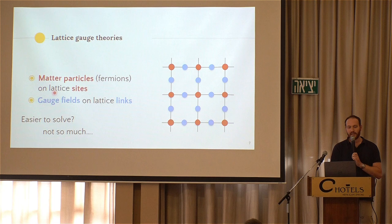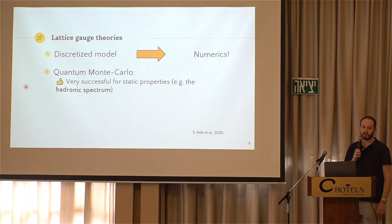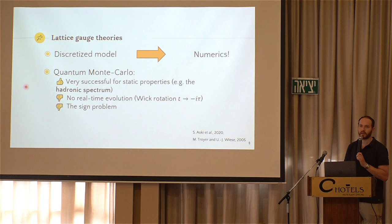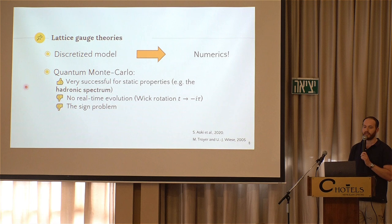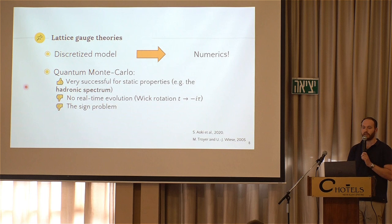But if it's discretized, then maybe you can simulate it. We already heard today about the quantum Monte Carlo method. Indeed, in this context, this method has been very successful to calculate a lot of things about this model. We also already heard today about some of the problems of the Monte Carlo method. The two most important ones are that you can't do a direct real-time evolution and the sign problems, which tells you that in certain cases it just doesn't converge.